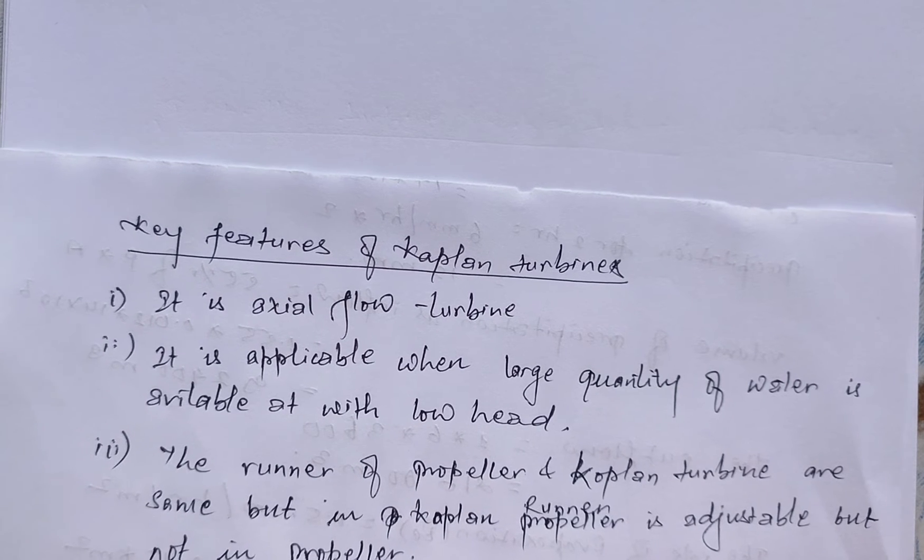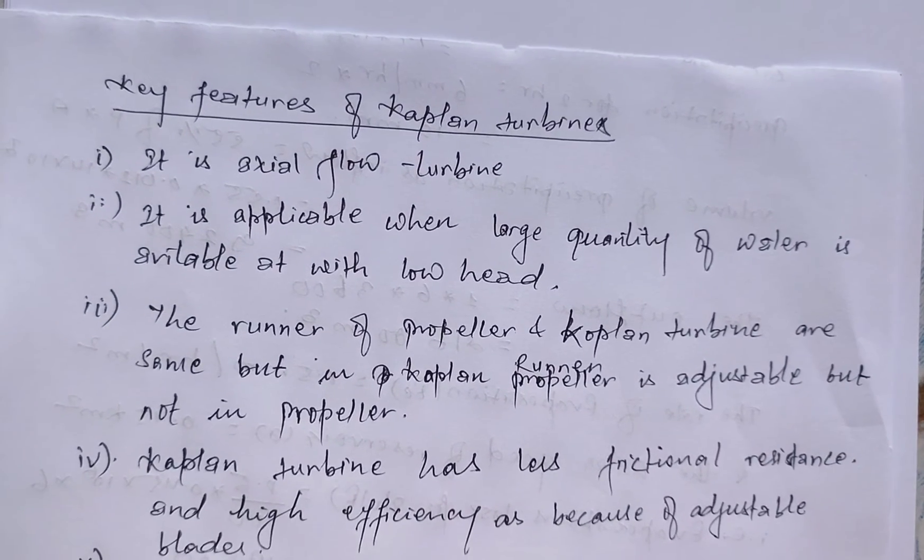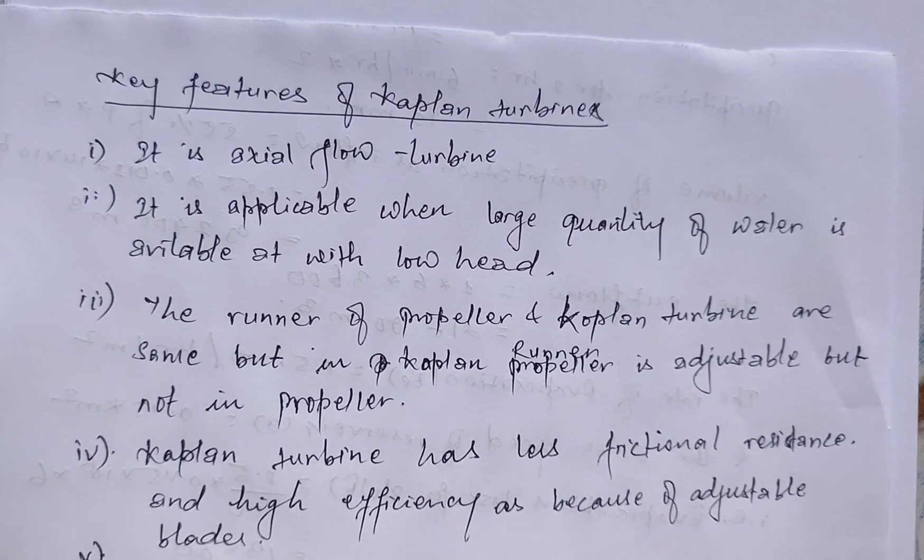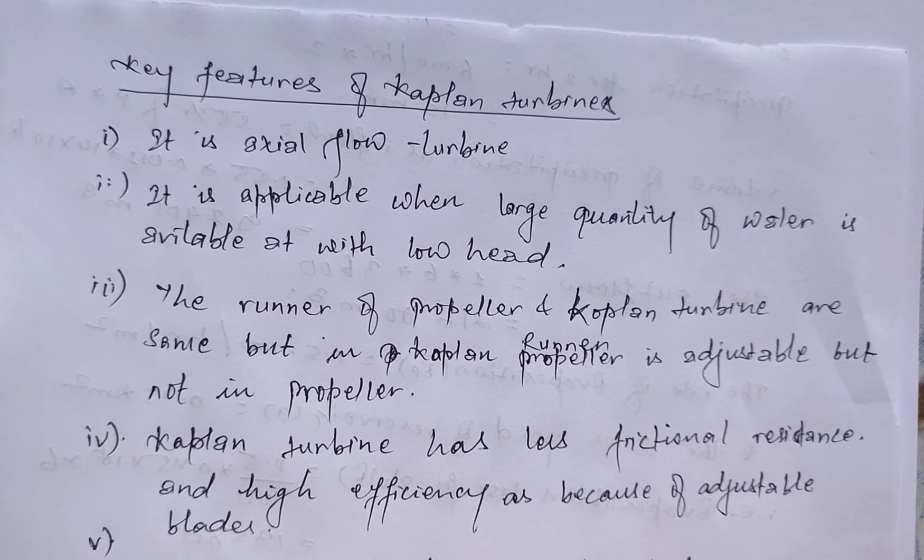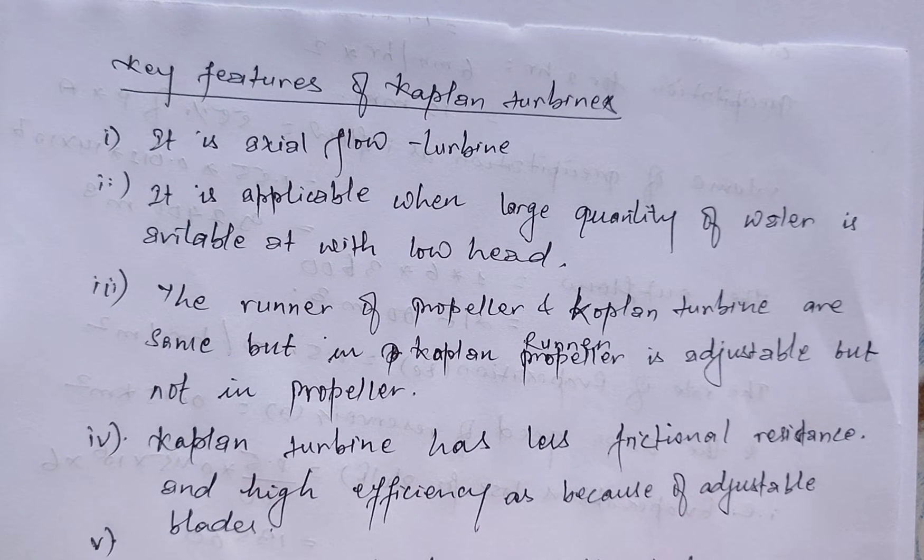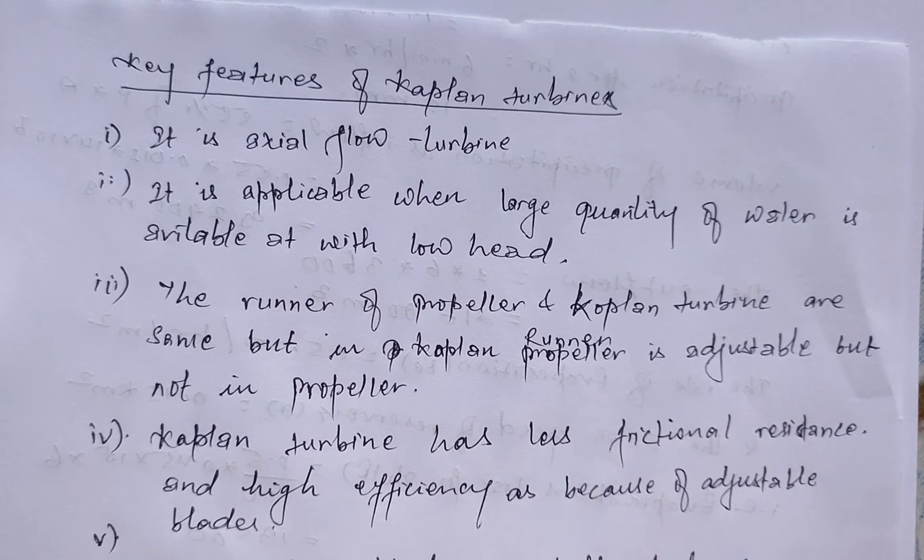Kaplan turbine has less frictional resistance and high efficiency because of adjustable blades.